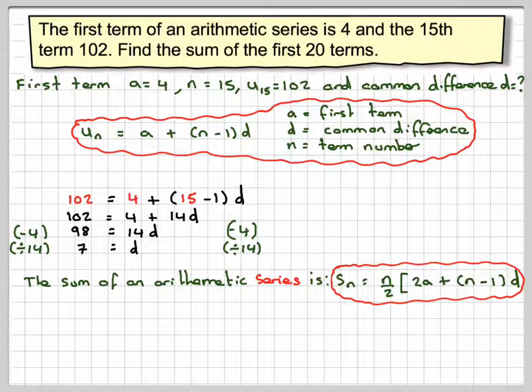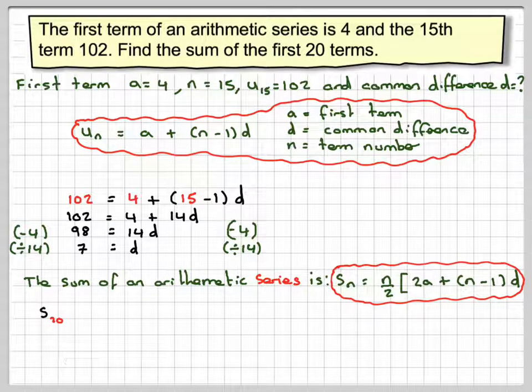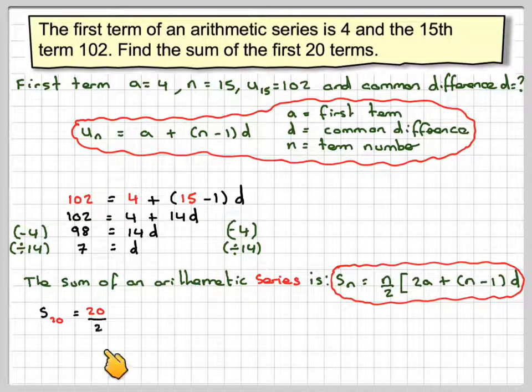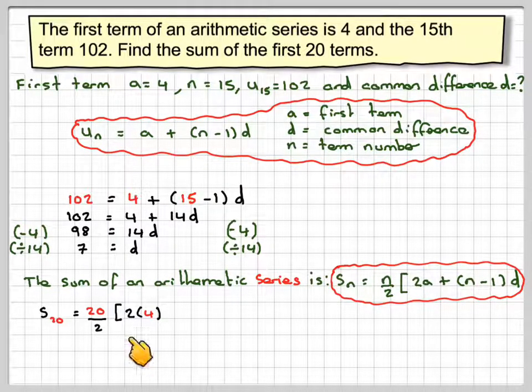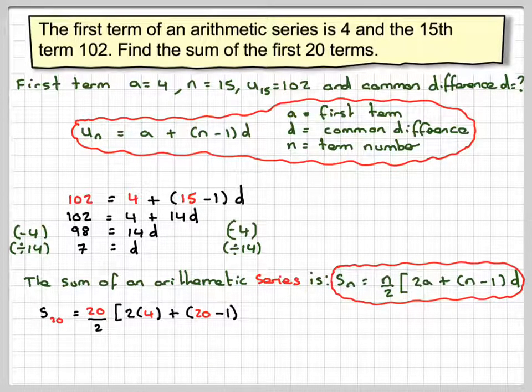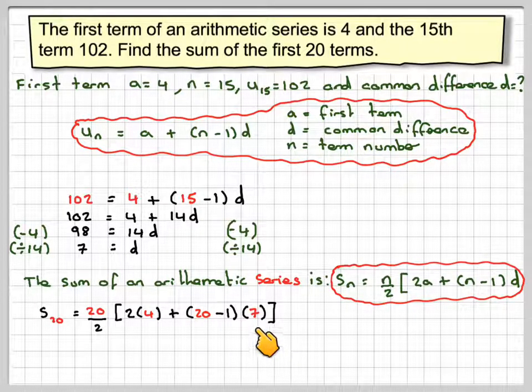We can't use the other formula because we don't know the 20th term. So S_20 equals 20 over 2, times (2 times 4 plus (20 minus 1) times 7).